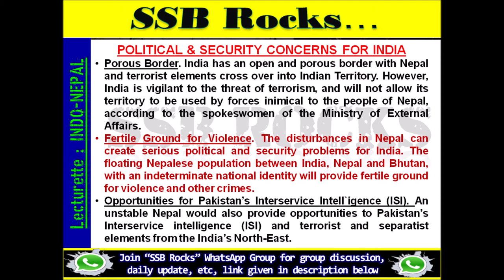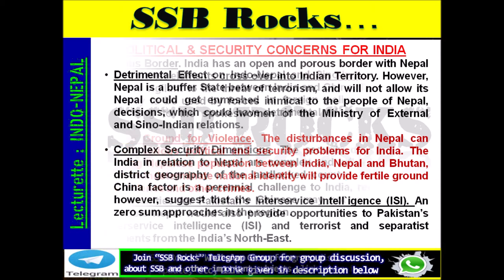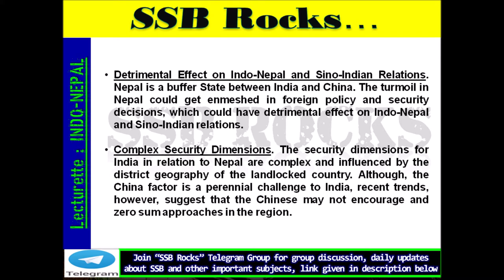Opportunities for Pakistan's Inter-Service Intelligence (ISI): An unstable Nepal would also provide opportunities to Pakistan's ISI and terrorist and separatist elements from India's northeast. Nepal is a buffer state between India and China. The turmoil in Nepal could get enmeshed in foreign policy and security decisions, which could have a detrimental effect on Indo-Nepal and Sino-Indian relations. The security dimensions for India in relation to Nepal are complex and influenced by the distinct geography of this landlocked country, although the China factor is a perennial challenge.